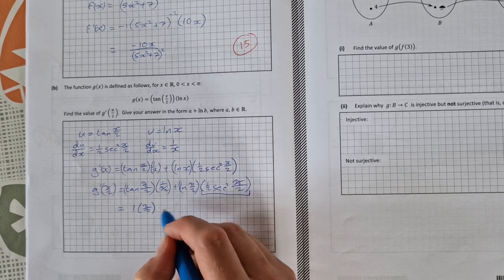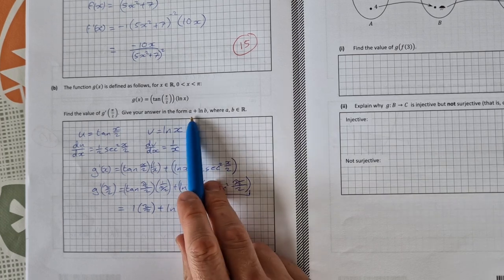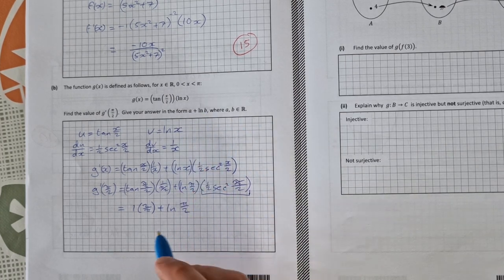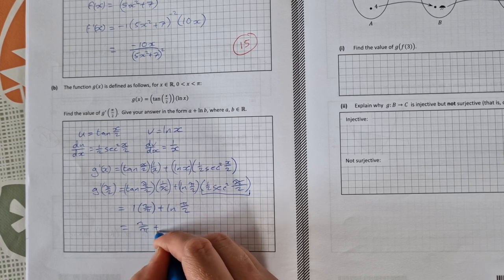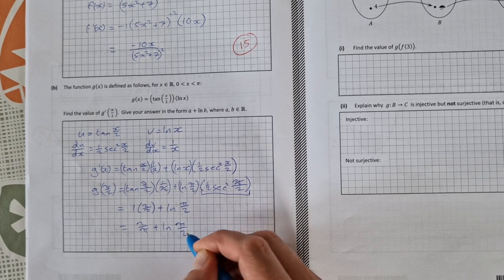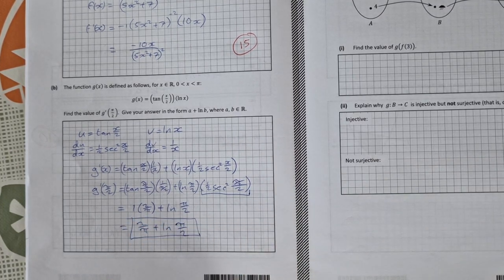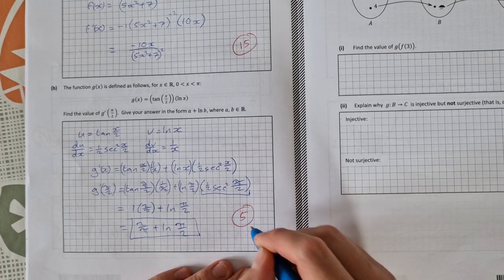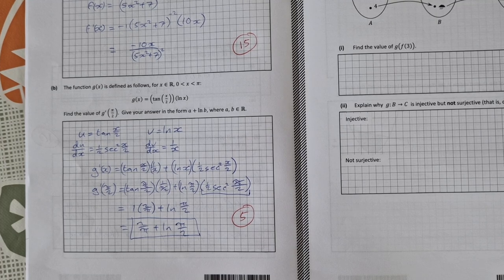So that's just 1. So that's plus ln π over 2. And the form they want is A plus log b. So that's equal to 2 over π plus natural log of π over 2. So that was a tricky part there part B. It was only worth five marks in the end. So anybody who got those five marks would probably have gotten high marks overall in the exam.